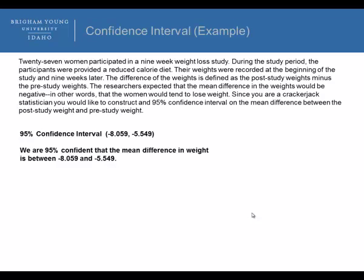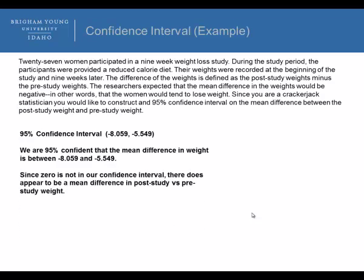So, the question now is, can we tell if there's a difference between pre-weight and post-weight? Well, the answer is yes. Since zero is not in our confidence interval, there does appear to be a mean difference in the post-study versus pre-study weight. So, in essence, for a confidence interval with matched pairs or paired sample data, if zero is in our confidence interval, we cannot detect a difference between the two groups. But if zero is outside of our confidence interval, then we can detect a difference.